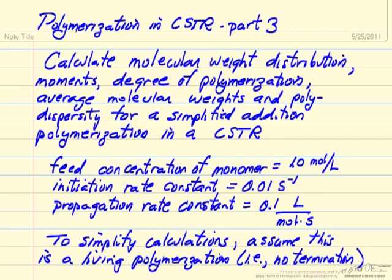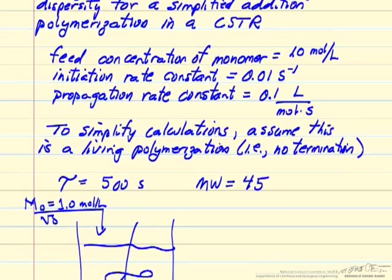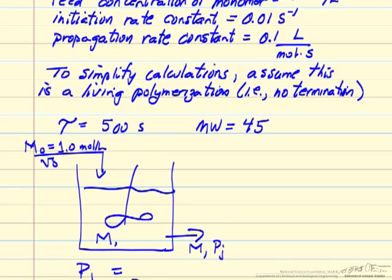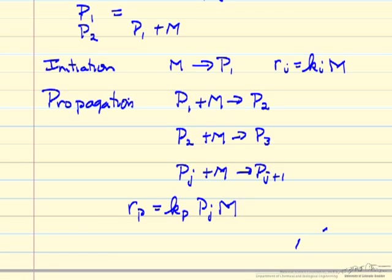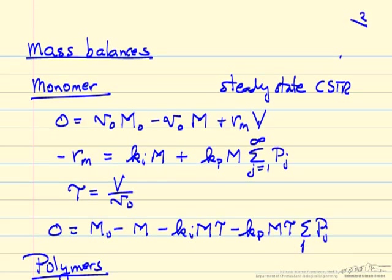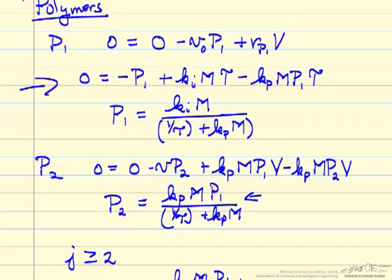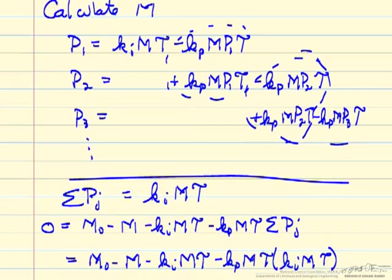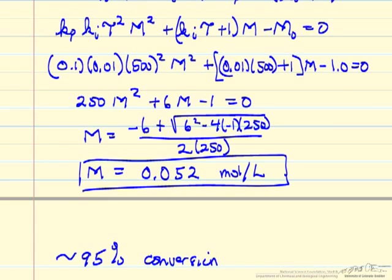This video is the third and final in this series on polymerization in the CSTR, where we're looking at calculating molecular weight distributions and degree of polymerization, given some rate constants. We're looking at a simplified type of polymerization in the CSTR where there's initiation and propagation but no termination steps. We showed the mass balances in the previous videos and how to calculate the polymer concentrations, and then how to calculate the monomer concentration in the reactor and at the exit.